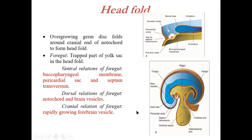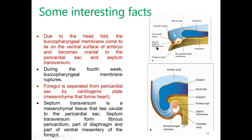Due to the head fold, the buccopharyngeal membrane comes to lie on the ventral surface of the embryo and becomes cranial to the pericardial sac and septum transversum. During the fourth week, the buccopharyngeal membrane ruptures. The foregut is separated from the pericardial sac by the cardiogenic plate, which is the mesenchyme that will form the heart. The septum transversum is a mesenchymal tissue caudal to the pericardial sac. It forms three derivatives: the fibrous pericardium, part of the diaphragm, and part of the ventral mesentery of the foregut.